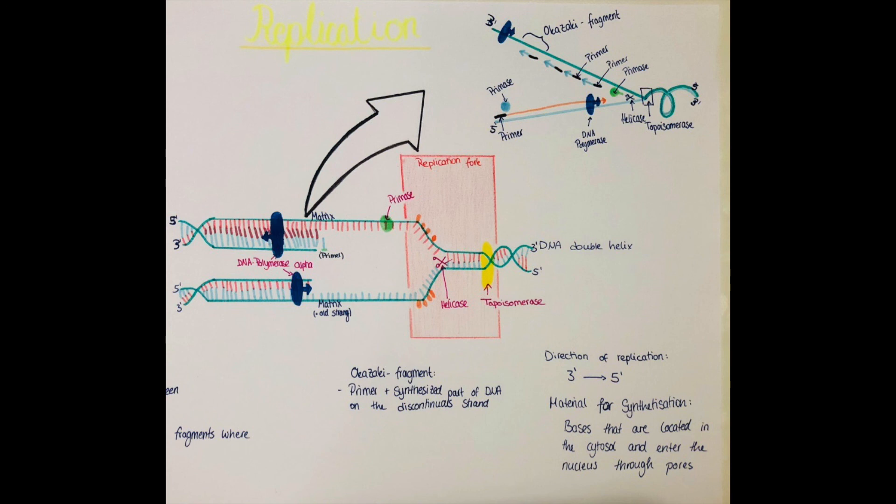The continuous strand is the one where the polymerase just walks along the DNA which is opened by the helicase. And the discontinuous strand is the one where we have many primers because it's slowly opening like a zipper.